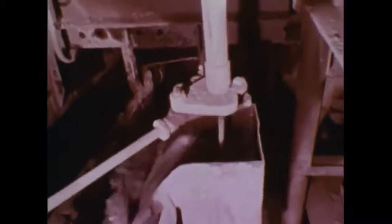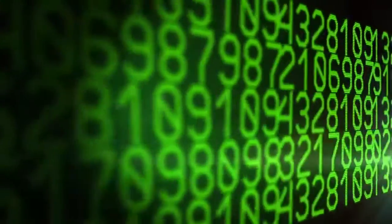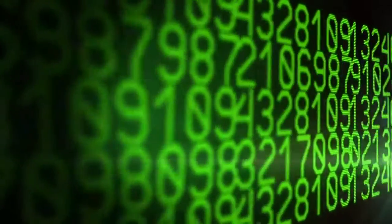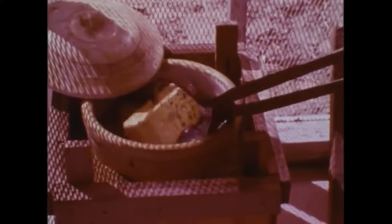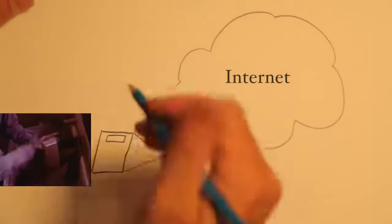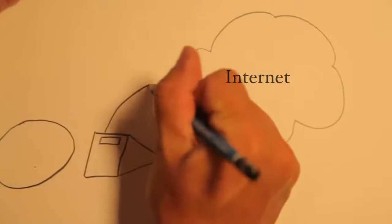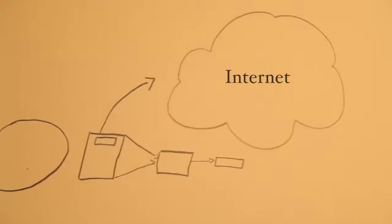And this is what Satoshi refers to as mining. It's a guessing game. The first computer in the network to find a lucky number for a block is said to have mined that block of new transactions. And immediately after mining a block, that lucky node sends it out to their neighbors for confirmation. Essentially saying, hey everybody, I won this race, please check that this block contains all valid transactions.